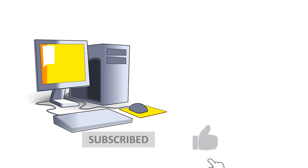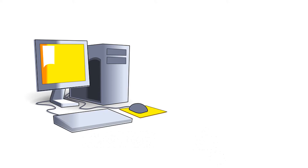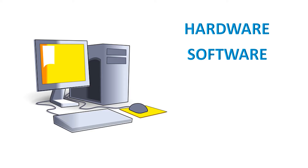A computer system has two parts: one is called the hardware part and another one is called the software part. These are the two major components of a computer system. A monitor is hardware, a CPU is hardware, a mouse is hardware, a keyboard is hardware — a computer consists of many components that are called hardware, which are visible and which you can sense and feel with your hand.